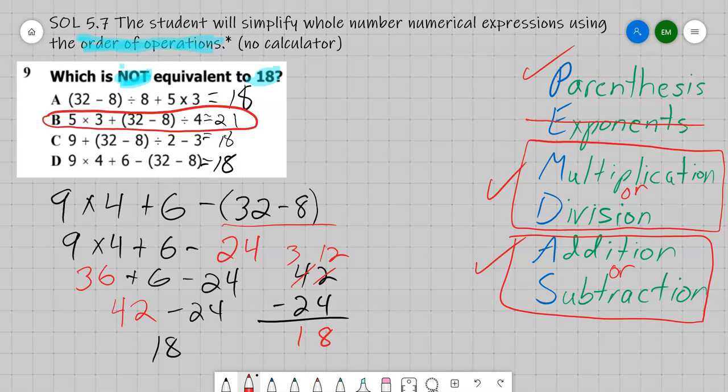So which is not equivalent to 18? It was B. And there's our order of operations and the last problem in the no calculator portion of the benchmark. I'll see you next time. Bye bye.